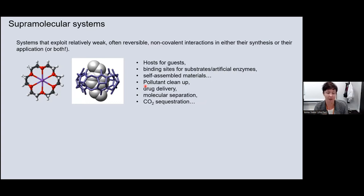We're talking about systems that exploit weak, often reversible, non-covalent interactions in either the way that you make them, the synthesis or their application, and sometimes both. I'm sure you'll all be familiar with the seminal work of Cram, Pedersen and Lehn, for which their Nobel Prize was awarded, looking at crown ethers, for example, as host-guest systems, and here is a cucurbituril acting as a host for a neutral molecule. It's a huge, broad field that I love. I couldn't possibly cover all the different strands of supramolecular chemistry, but I've tried to summarize some of the applications and uses that people are developing these systems for.